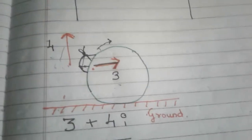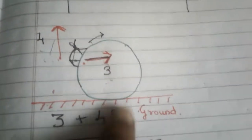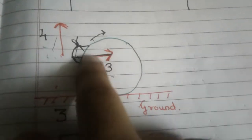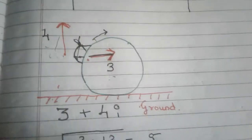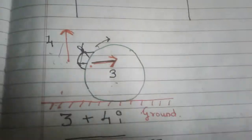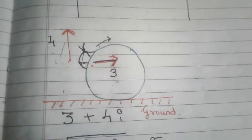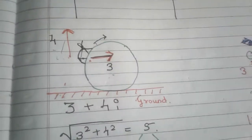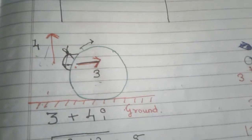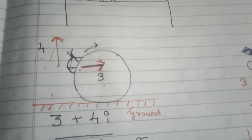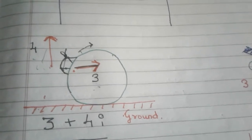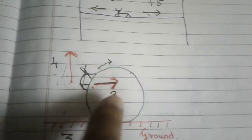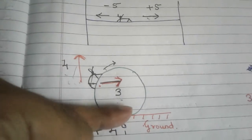But let's imagine another case where the same ant is moving along the surface of a sphere — a ball, a marble, some spherical object. Now its velocity is still 5, but that velocity is getting divided into two components.